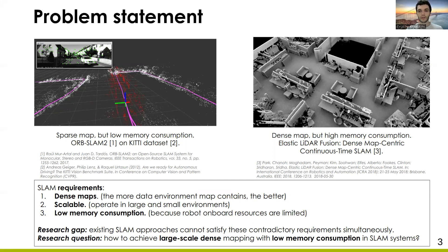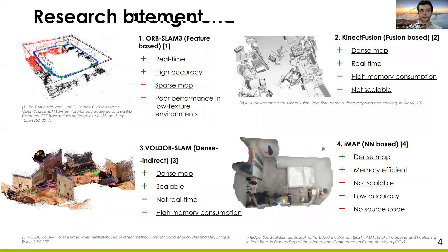This work is aimed to research the question of achieving low memory consumption by dense mapping in SLAM systems for large-scale environments. Existing SLAM approaches cannot satisfy such requirements simultaneously. For example, ORB-SLAM 3 is a scalable but sparse SLAM approach — it is a state-of-the-art method in terms of localization, but its maps are hardly understandable by humans. On the other hand, KinectFusion and Wolder SLAM algorithms produce dense maps, but they require a lot of resources to store them. Moreover, KinectFusion cannot operate in large-scale environments.